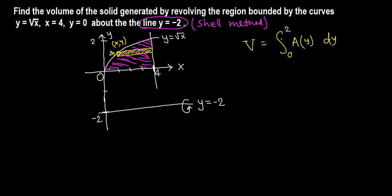So this is the formula we'll be using to find the volume. Now when we revolve this sample rectangle about this line, we'll get a cylinder, hollow inside.